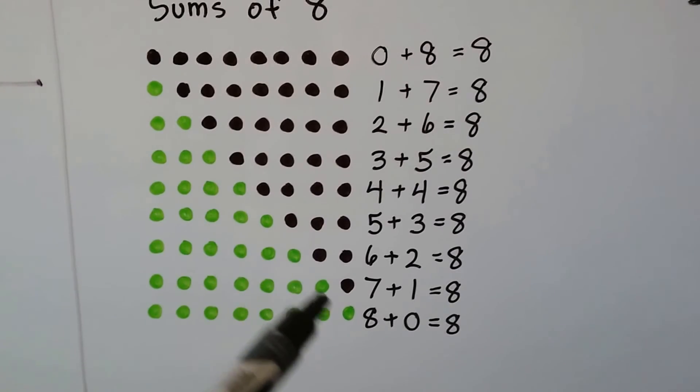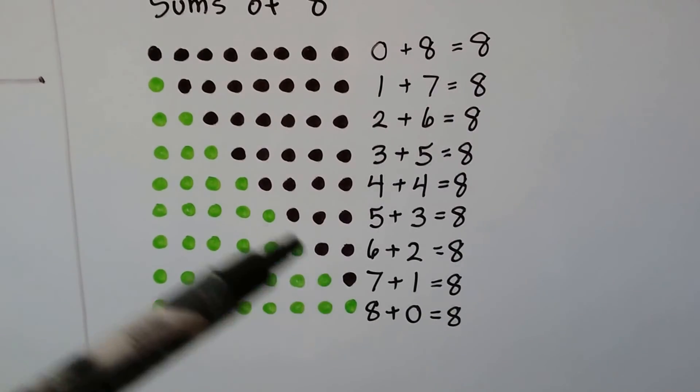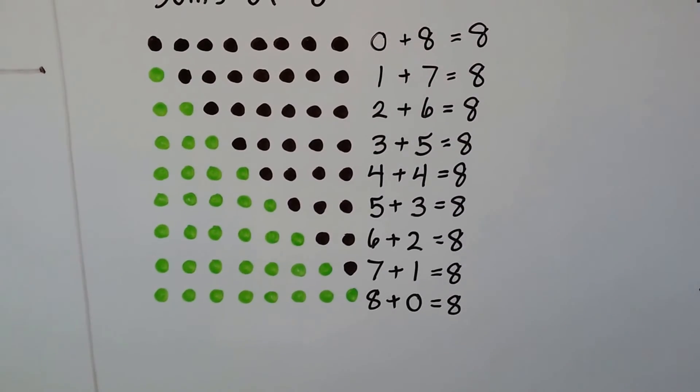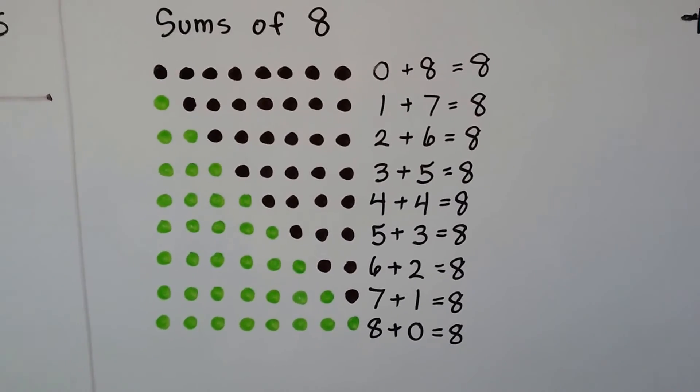And as the green ones increase and go up and we get more, the brown ones go down and become less. But they still equal eight. See? You can do that with nine and ten also.